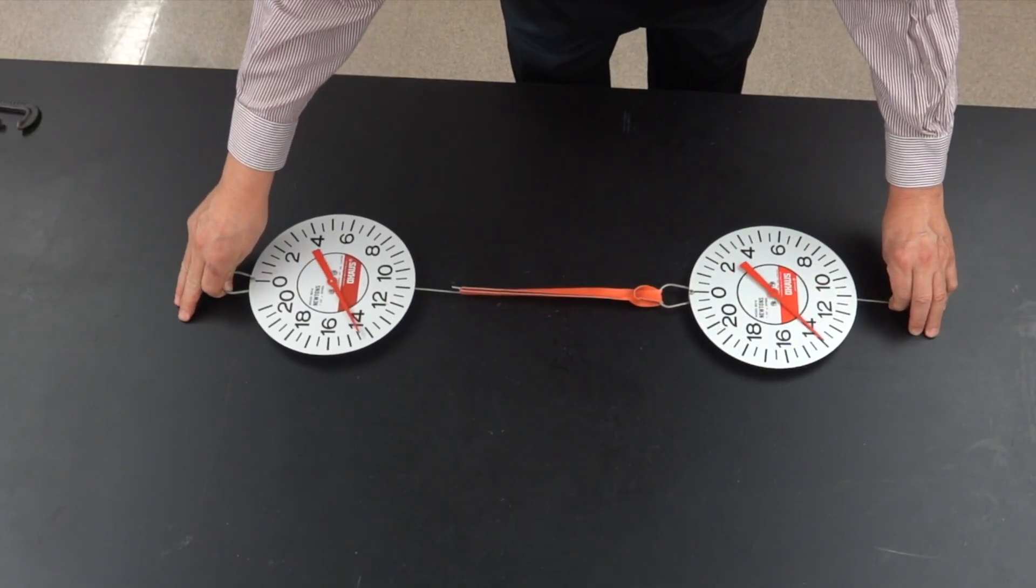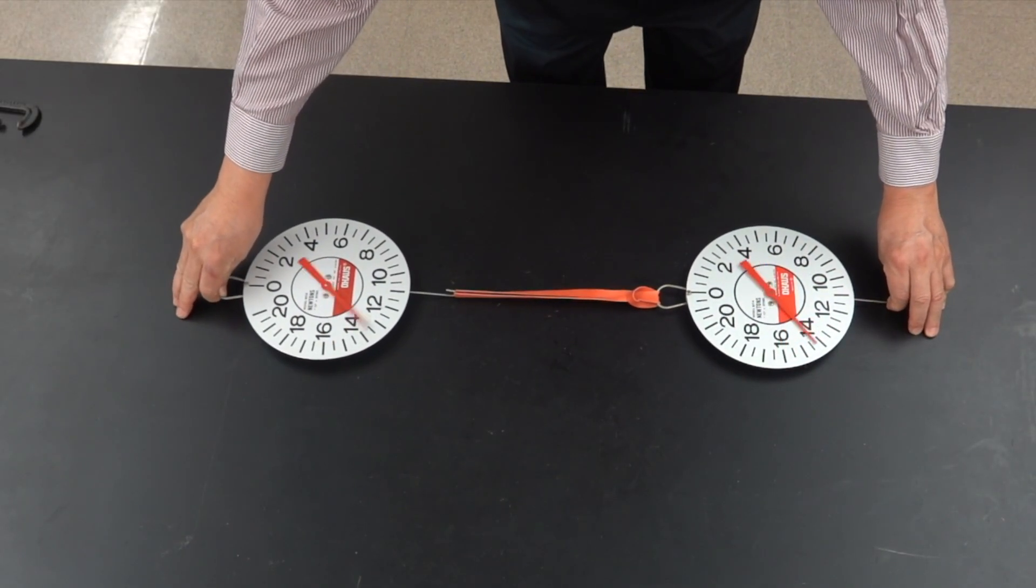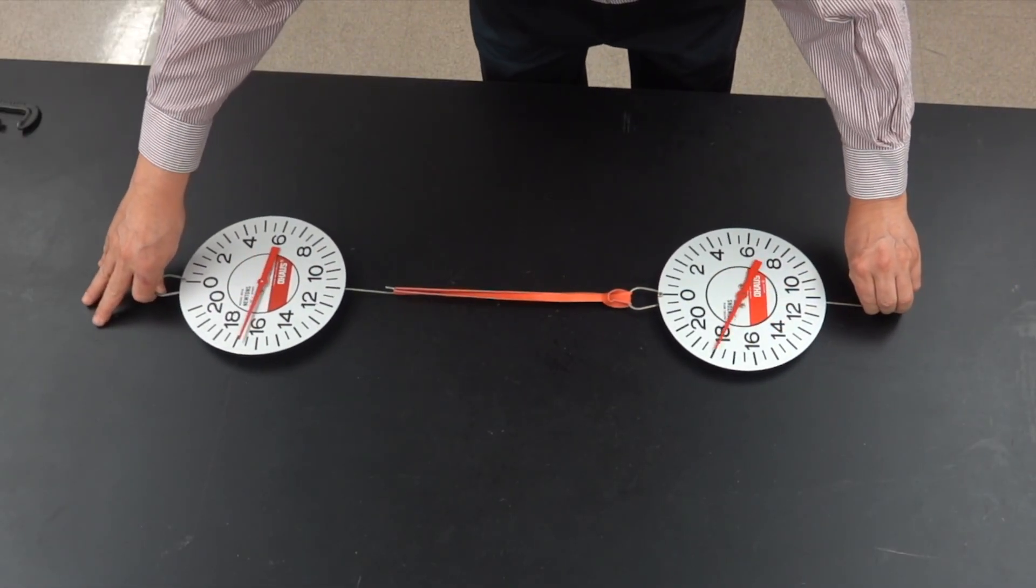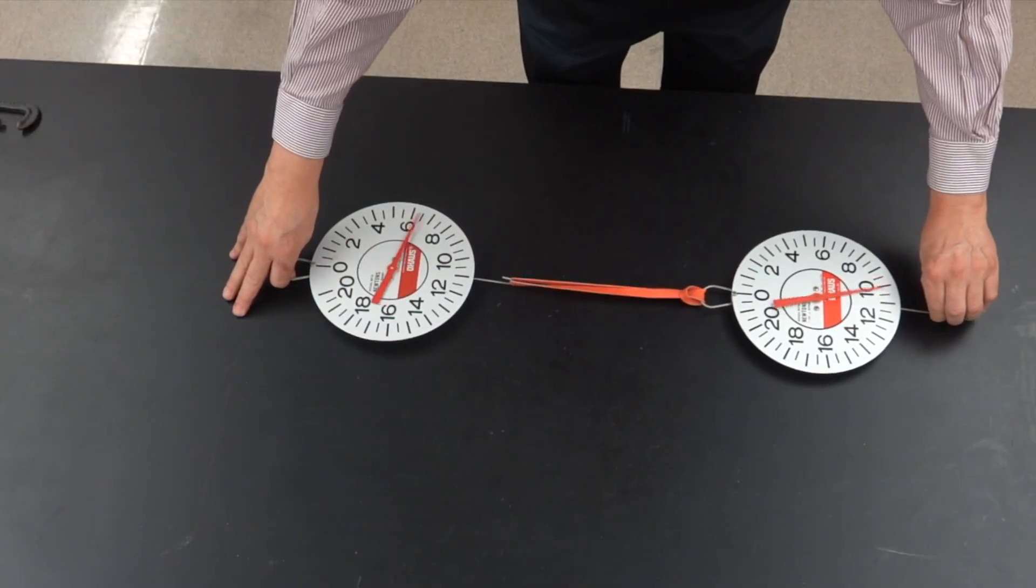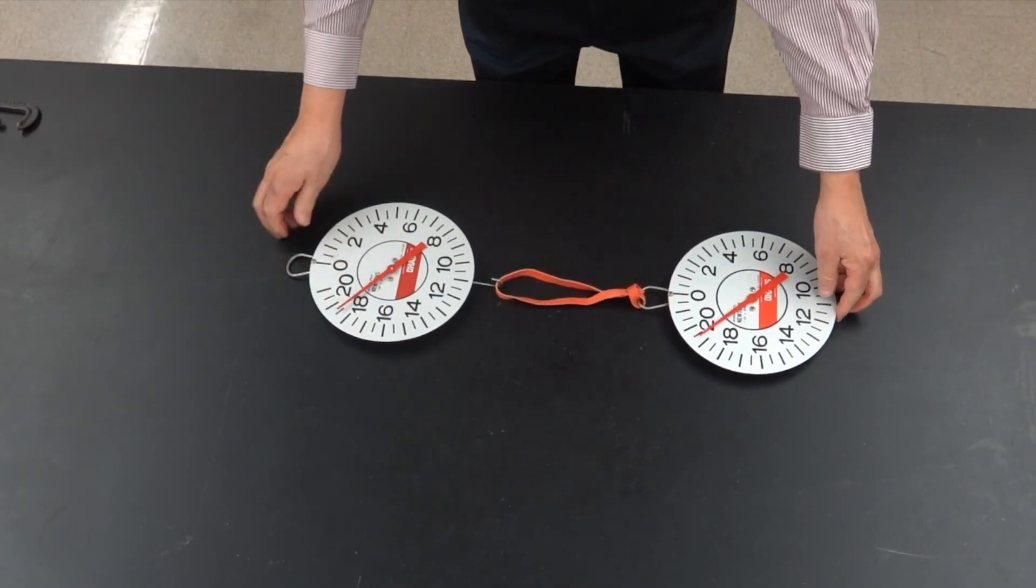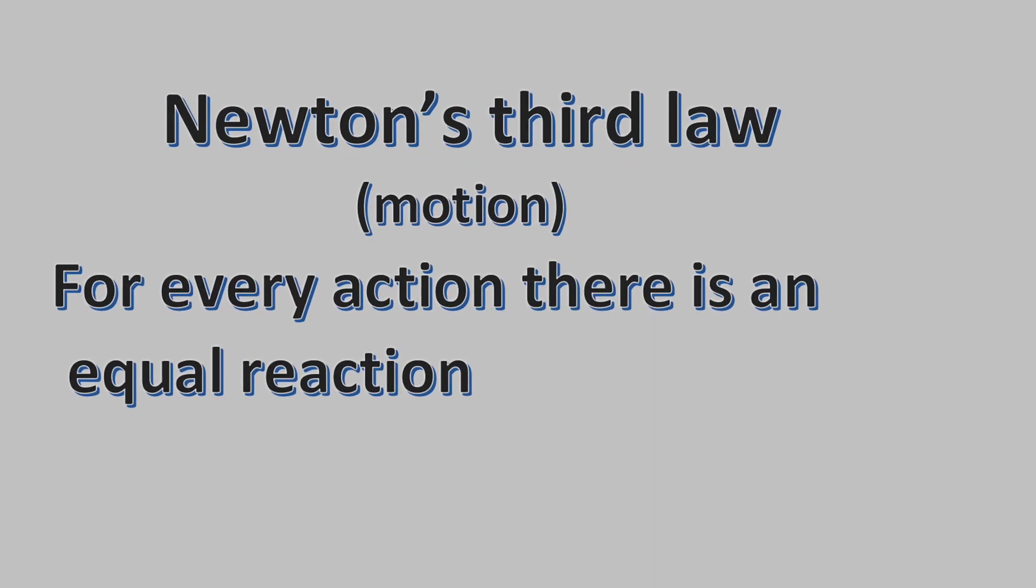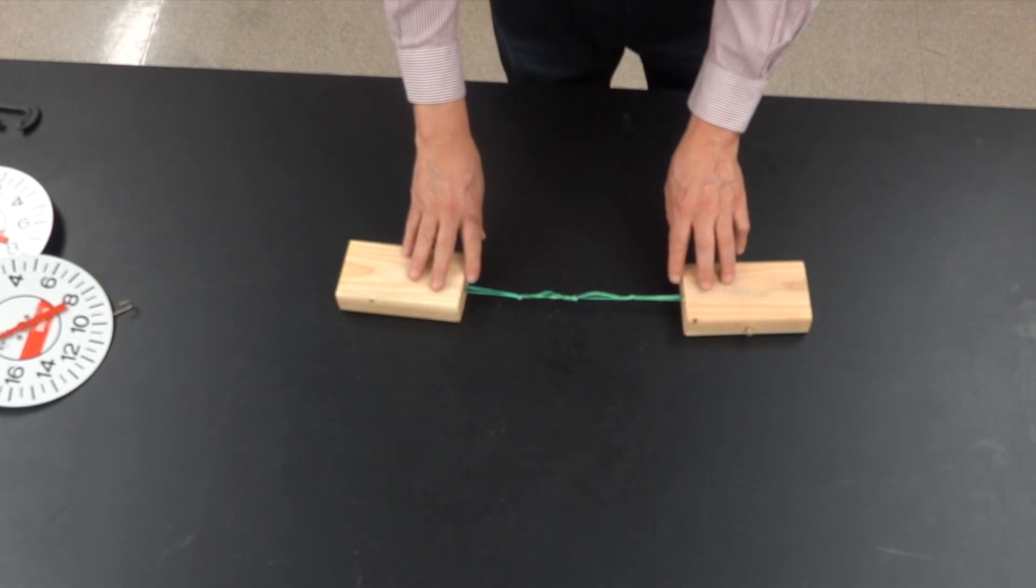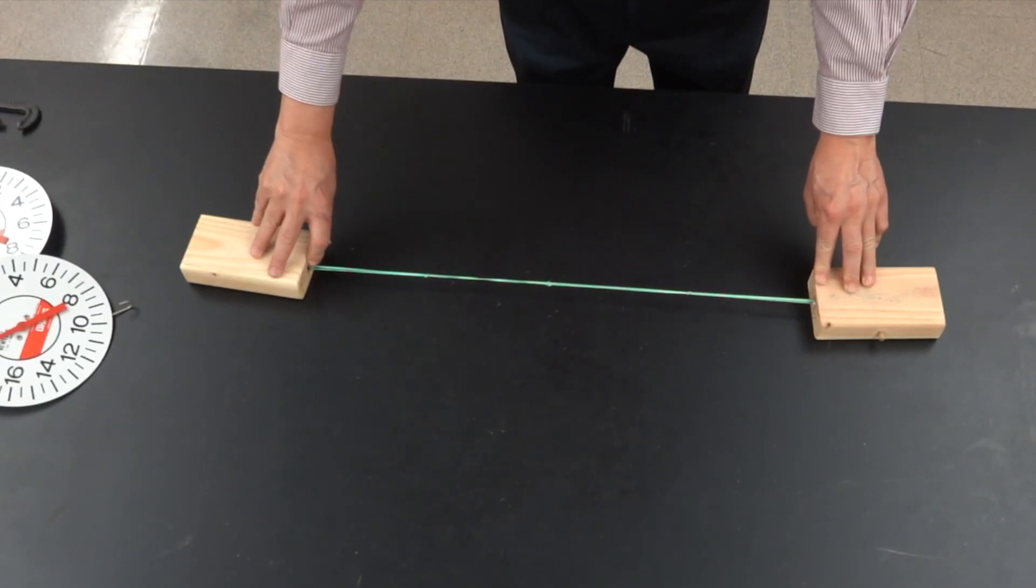As we stretch the rubber band, the force is constantly changing, but the scales show us that the force is always equal in opposite directions. So even as the amount of force changes, each block is always feeling the same amount of force as the opposite block.